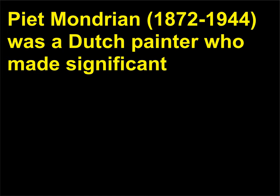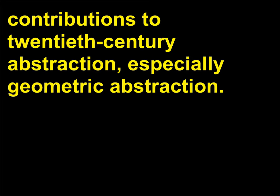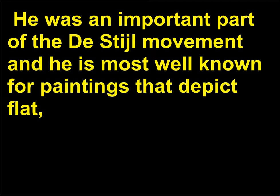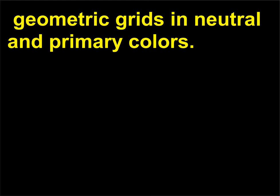Who was Mondrian? Piet Mondrian (1872–1944) was a Dutch painter who made significant contributions to 20th century abstraction, especially geometric abstraction. He was an important part of the De Stijl movement and is most well known for paintings that depict flat, geometric grids in neutral and primary colors.